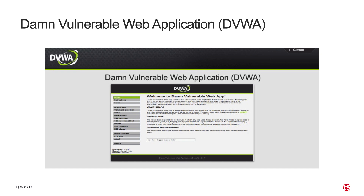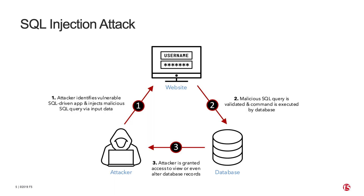For each of these attack types, we'll be showing an attacker trying to exploit this application without a WAF in place, and then again with an AWS WAF with F5's OWASP top 10 managed rulesets attached. So let's dive into it.